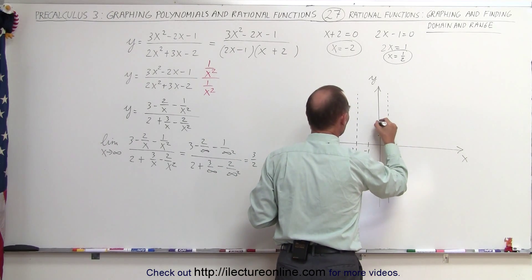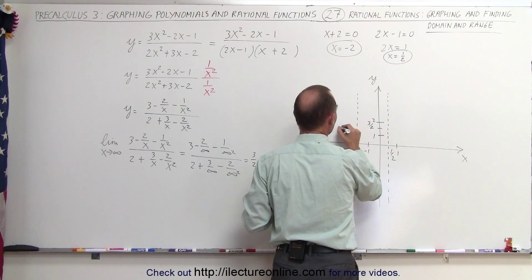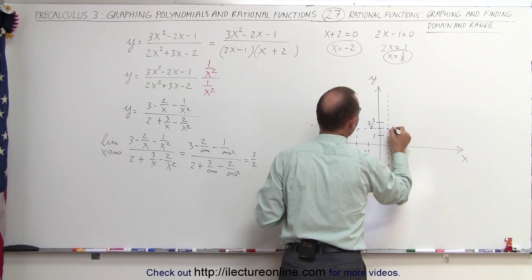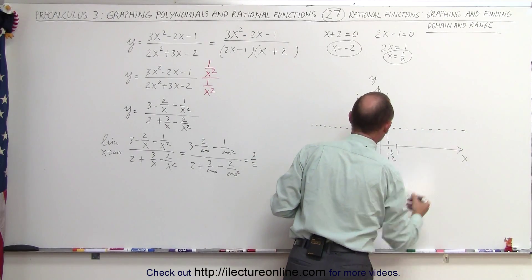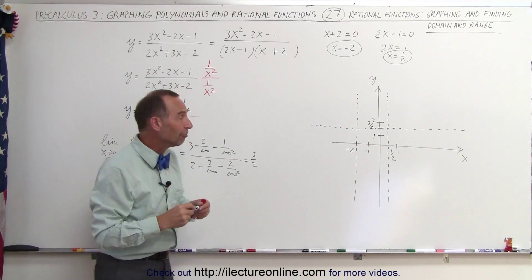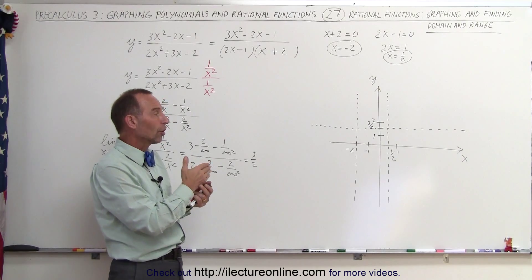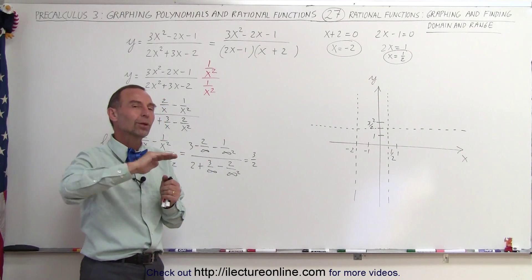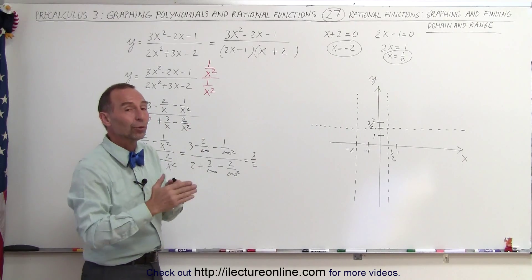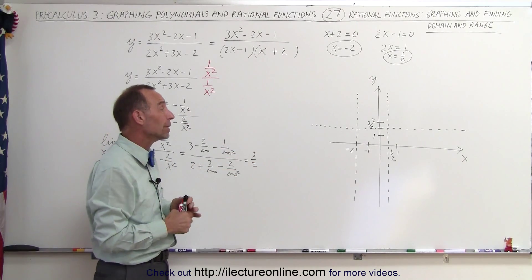So 3 over 2 is right here, and we'll have a horizontal asymptote at that level. Remember, the horizontal asymptote can be crossed by the graph — it doesn't violate anything. We just know that as x becomes really large, the function will tend towards that asymptote, either from above or from below, and at this point we don't know yet which way.